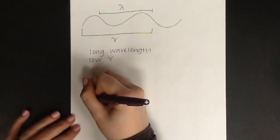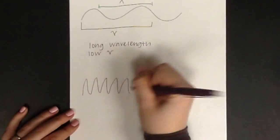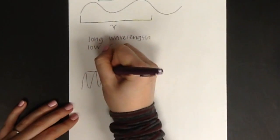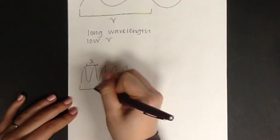So, if a wave has a long wavelength, it will have a low frequency. If a wave has a short wavelength, then it will have a high frequency.